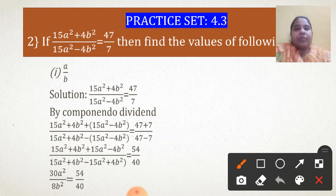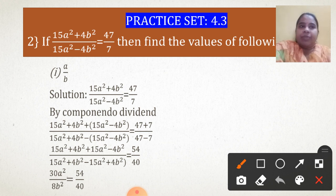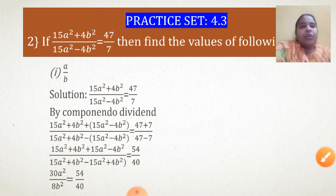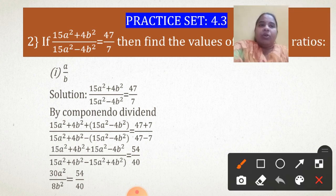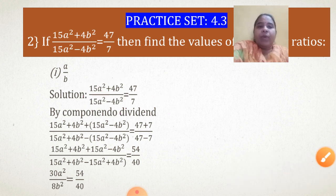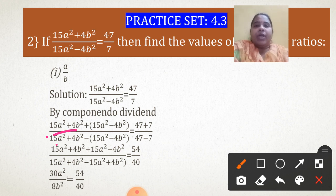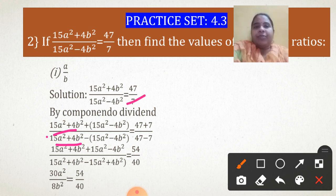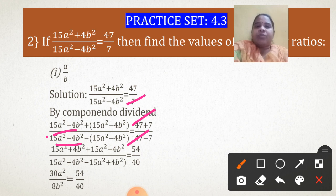Now let us use it here. See the equation — do not be afraid by this bigger equation, it is not at all difficult, just lengthy. This is the basic equation given to us. I want to use Componendo-Dividendo. The numerator part is 15a² + 4b², and the denominator is 15a² - 4b². I write the numerator twice: 15a² + 4b², 15a² + 4b². Then the denominator twice: 15a² - 4b², 15a² - 4b² — once added and once subtracted.